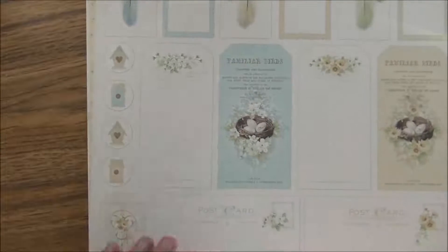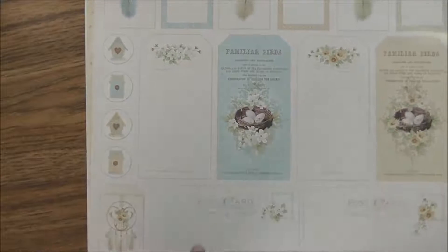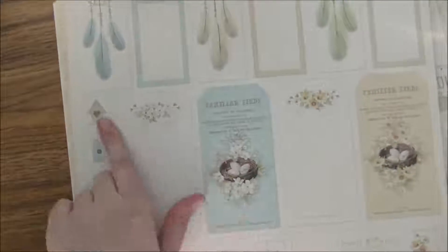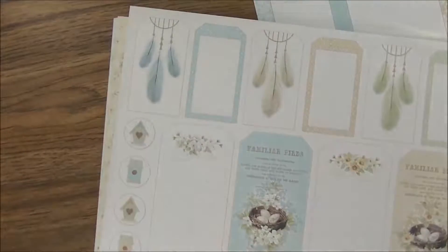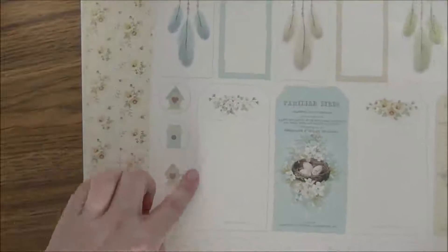Then we have more cut-aparts here. This page is called Tags and you get some postcard cut-aparts, some tags, and up here you've got like a little bit of a dream catcher that's really pretty, some little circles and a tag piece down here. The back is this mossy green color.